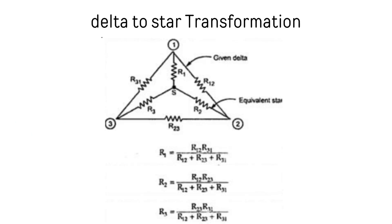Delta to star transformation: in delta to star transformation, the delta values R12, R23, and R31 are given, and you can find the star values R1, R2, and R3. R1 equals R12 times R31 divided by (R12 plus R23 plus R31). R2 equals R12 times R23 divided by (R12 plus R23 plus R31). This is the relationship for delta to star: delta resistances are given and you can convert them into star.